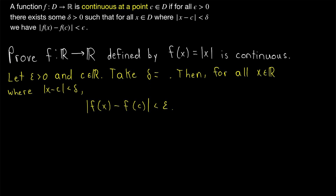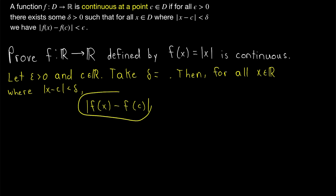To figure out what our delta needs to be equal to, we want to play around with this expression a little bit, to see what delta we'll need to choose to guarantee that this is less than epsilon. Of course, we don't know that it's less than epsilon yet — we've just written that down because that's where we're trying to go. So now let's work with this to figure out what delta will make our proof work.